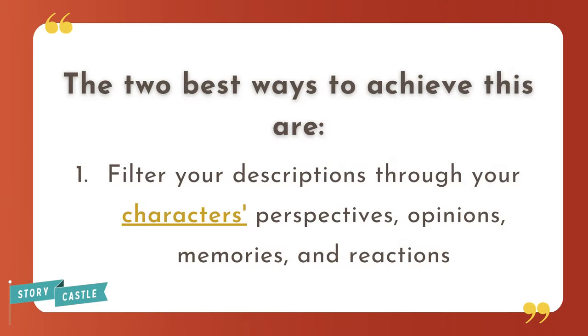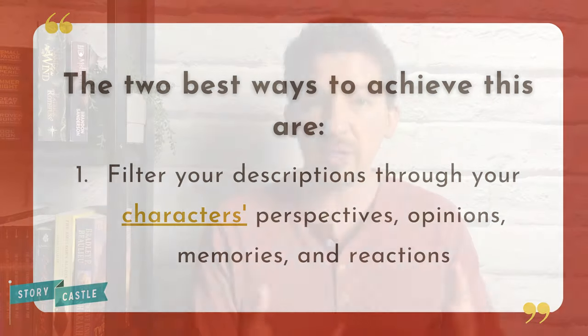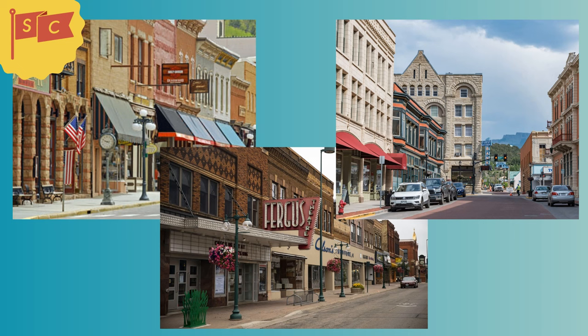The first, and probably easiest of the two, is to filter your descriptions through the perspective, opinions, and feelings of your characters. As an example, let's take a small town main street somewhere in America. You could spend a lot of time describing what this quaint small town street looks like — the buildings, the trees, whatever — and you could paint a nice picture. But that same description would be so much stronger and more engaging if it was presented through the point of view of a war veteran returning home to his hometown after years abroad. Now all of a sudden your character has responses, reactions, and feelings to the things he is seeing, which you are describing, but also he is then reacting to.